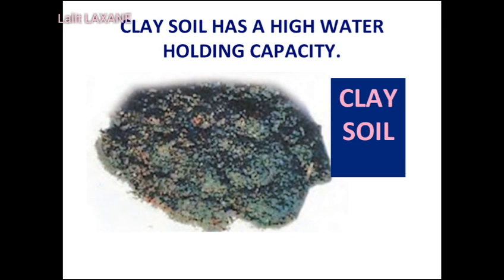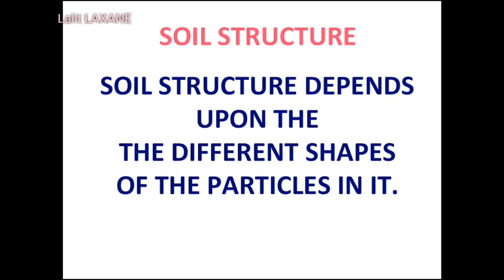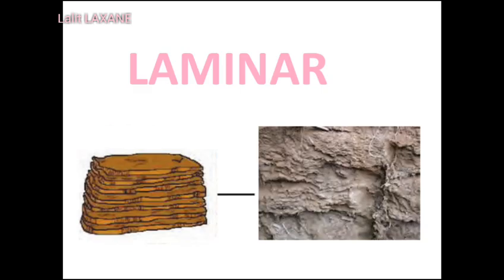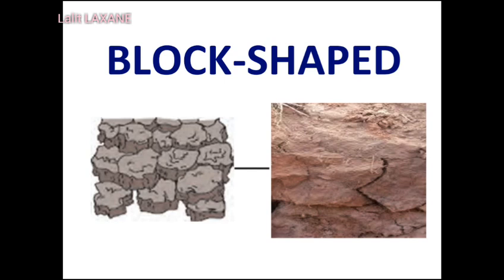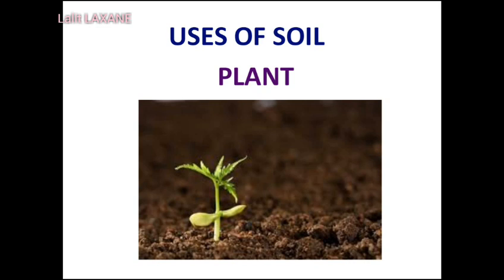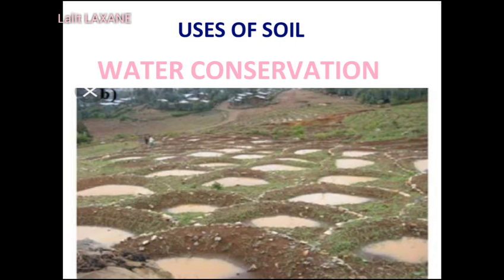Clay soil: In this soil, the proportion of small particles is maximum. The particles of clay soil feel smooth to touch. Clay soil has a high water-holding capacity. Soil structure: The structure of the soil depends upon the different shapes of the particles in it. Soil occurs in the form of columnar, laminar, granular, as well as block-shaped structures. The fertility of soil depends upon the soil structure. Roots get a sufficient supply of oxygen, water drainage is good, and therefore the roots of plants grow well.